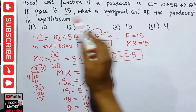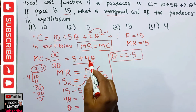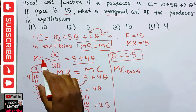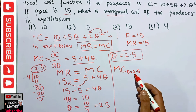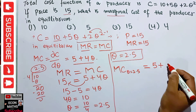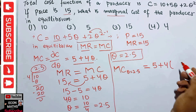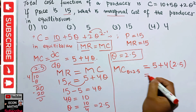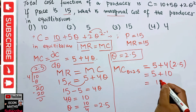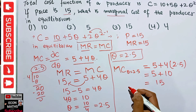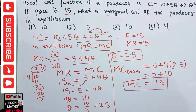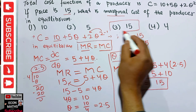Now we calculate the marginal cost at equilibrium. Evaluating the marginal cost function at q = 2.5: MC = 5 + 4(2.5) = 5 + 10 = 15. So the marginal cost when q = 2.5 is equal to 15.